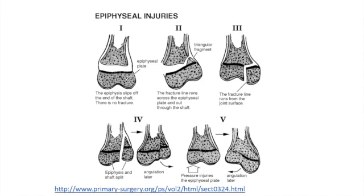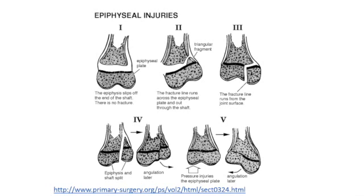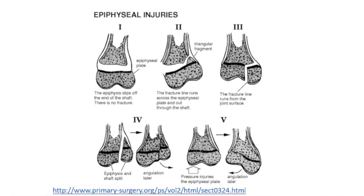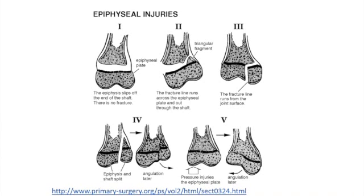You can also see that in type 4, the bone has grown more on the left side than the right. In type 1 and type 2 injuries, the epiphyseal plate is intact and all in one piece. In types 3, 4, and 5, the epiphyseal plate is damaged and separated.